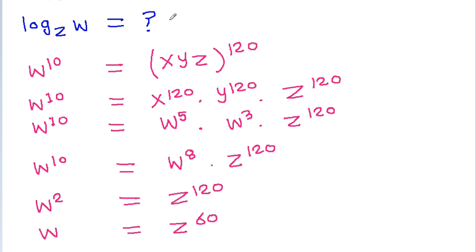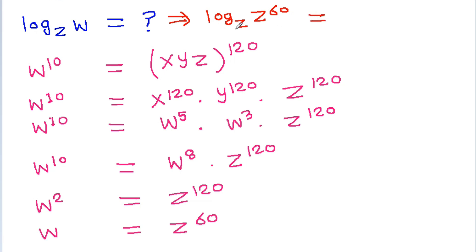From here we can get log base g of w, where w equals g to the power 60, so log base g of g to the power 60 will be equal to 60.